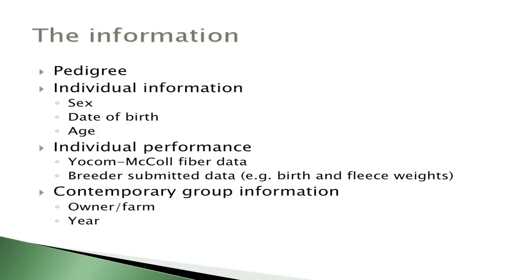To calculate EPDs, we use pedigree information from registration, information about the individual — sex and birth date — so we can calculate age at sampling. We get two types of performance data: some from Yoakam McCall when you send in a fleece sample, and breeder-submitted data including fleece weight and birth weights. We also use contemporary group — knowing which animals were on which farm in which year, competing against this animal.